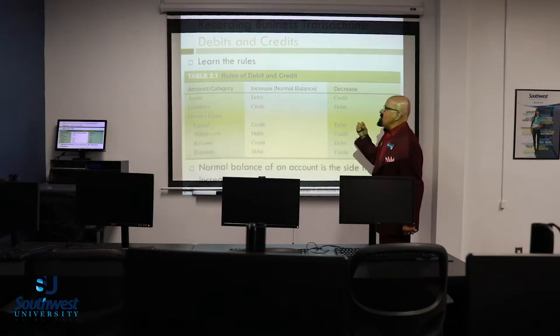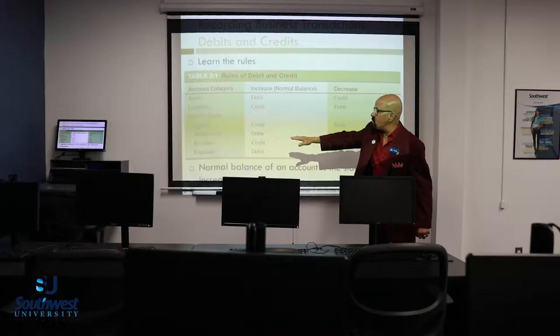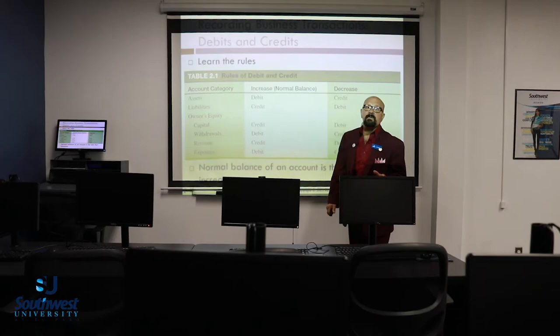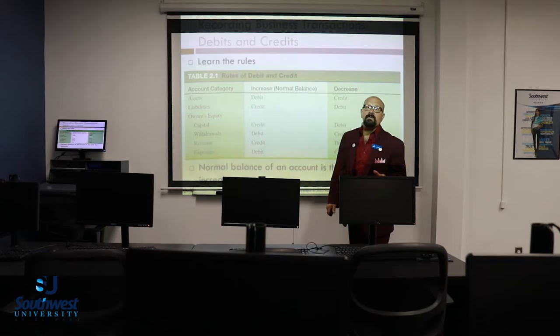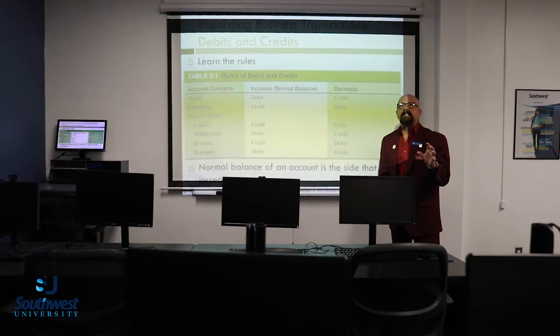The normal balance is the account on the side that increases the category. The normal balance for assets is debit. For liabilities it's credit. Capital: normal balance is credit. Withdrawals: normal balance is debit. Revenue: normal balance is credit. Expenses: normal balance is debit. For all you analytics — don't overanalyze this, because it's going to get in the way of you learning it. Just accept it; it is what it is.